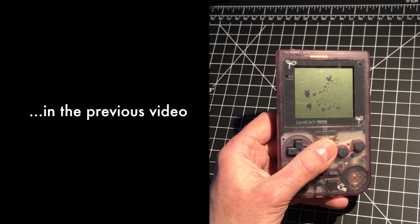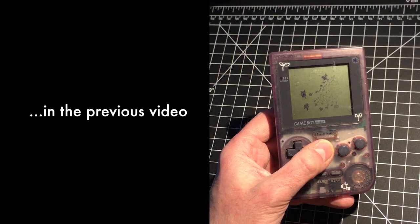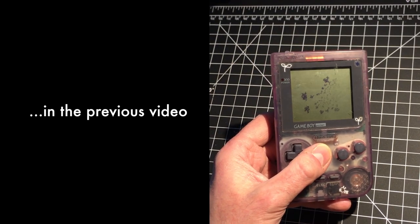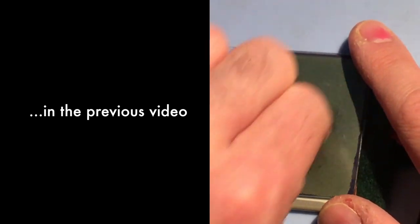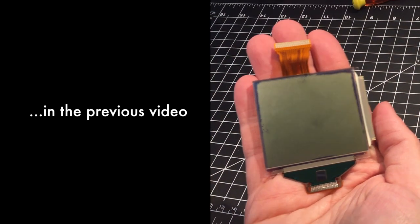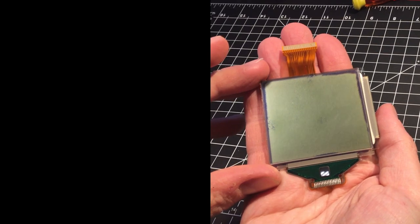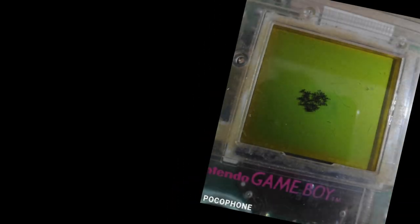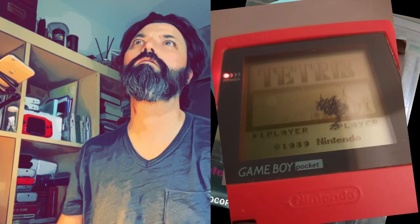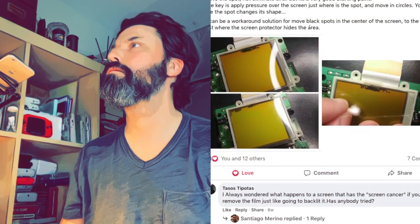Hi there. In part one, I took this nasty screen from this Atomic Purple Game Boy Pocket, but I carefully pushed out most of the dead liquid crystals that were on the screen, and I ended up with the LCD looking something like this. Oh, look how well this turned out. But after that, I still wasn't satisfied, because I knew there had to be more I could do to improve the screen.